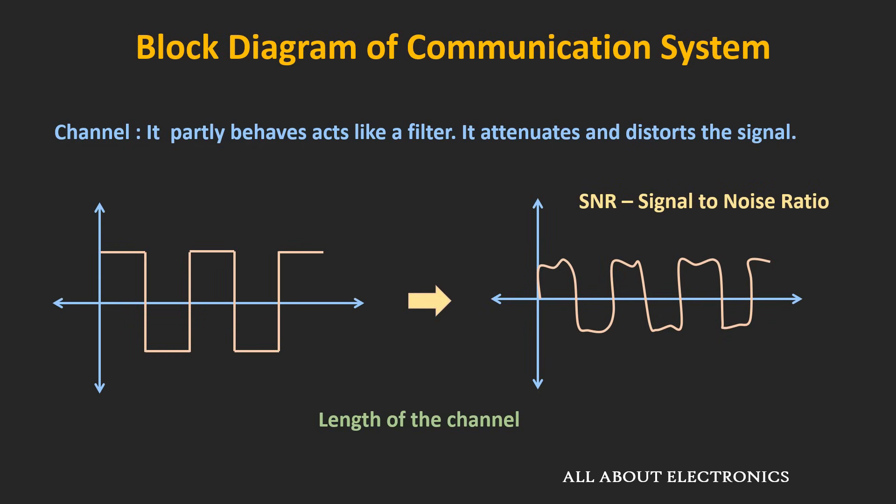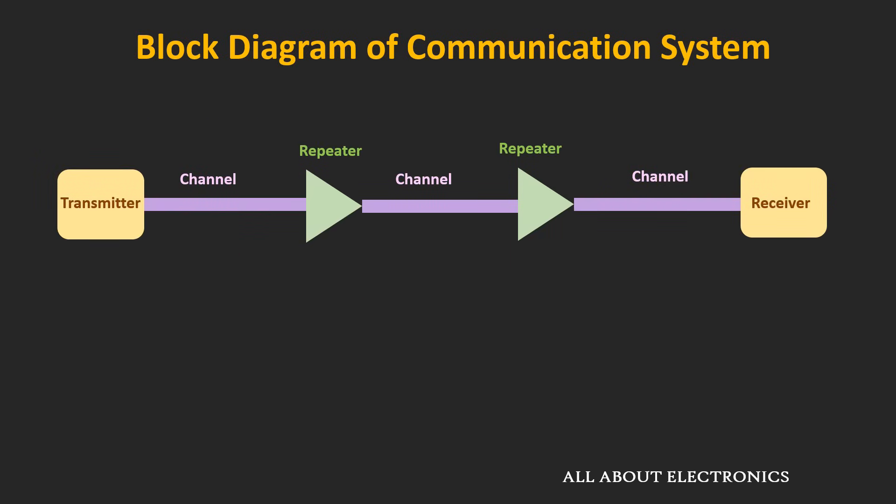Many times the signal needs to be transmitted over a much longer distance, and it is not possible to increase signal power beyond a certain limit. In such cases, regenerative repeaters are used after certain distances. These repeaters detect the distorted and noisy signal and generate a fresh copy of the transmitted signal, which is then transmitted again over the channel. Additionally, for digital signals, using error correction mechanisms and adding redundancy to the message signal, errors in the received signal can be reduced.